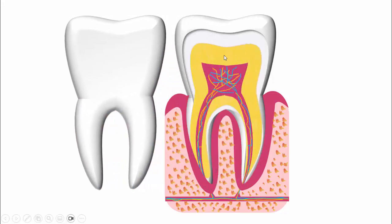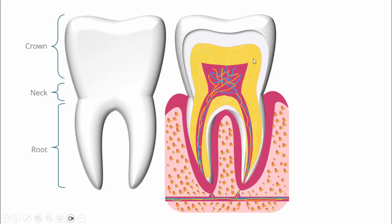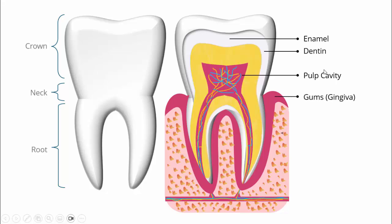It slides aside and then shows the internal part of the teeth. So first let's talk about the overall structure of the tooth: this is the crown, this is the neck, and this is the root. Then we'll see how it looks inside — what are the parts of the tooth inside. You can see here: enamel, dentin, the pulp, the gums, the bone, the cement, and some nerves and blood vessels.